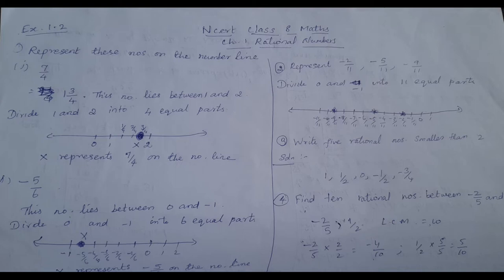Second sum: represent minus 2 by 11, minus 5 by 11, minus 9 by 11. All three will be represented on a single line. First, draw a straight line. Minus 9 by 11 lies between 0 and minus 1, so the denominator is 11. Divide 0 and minus 1 into 11 equal parts.